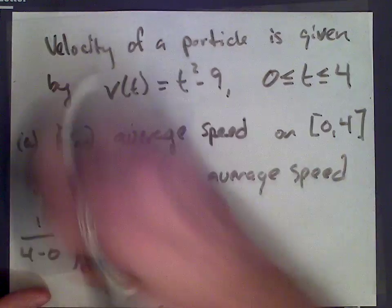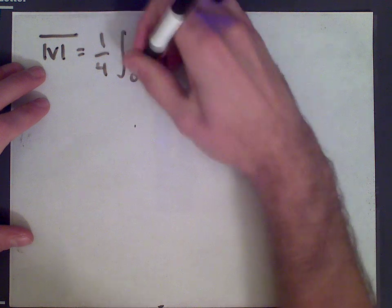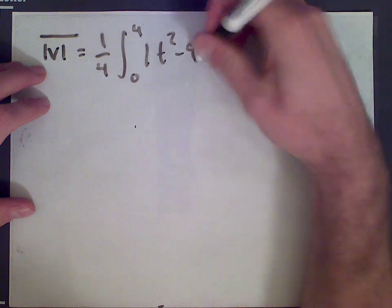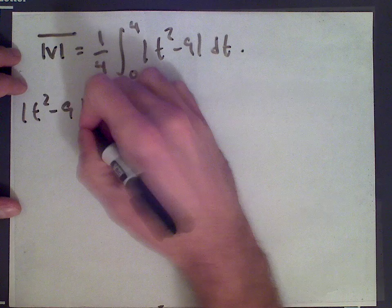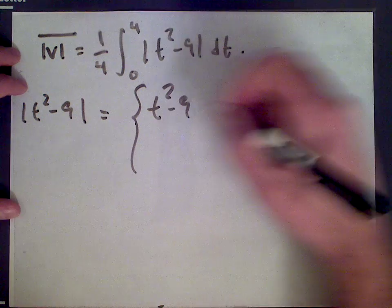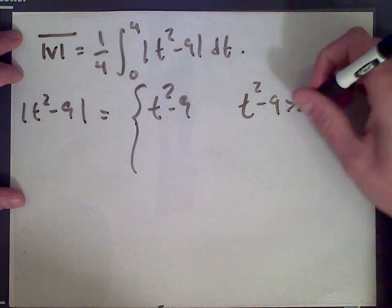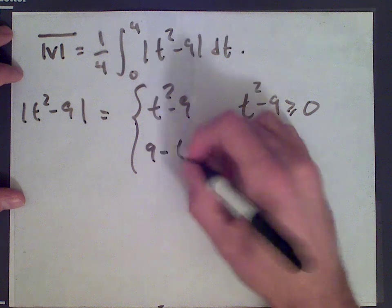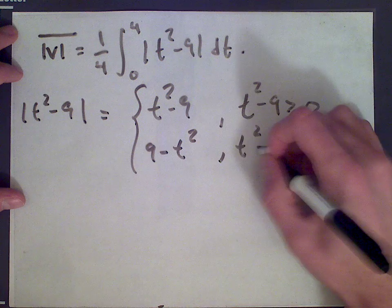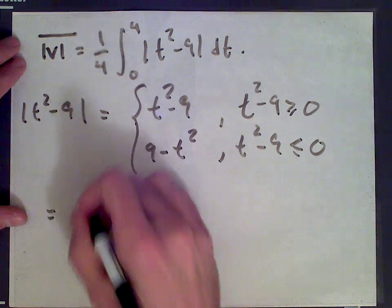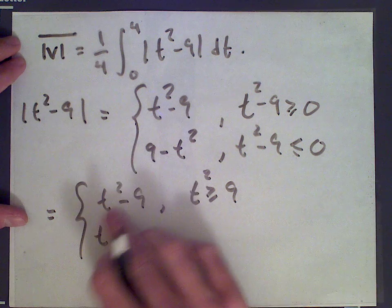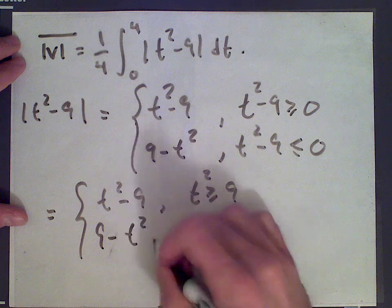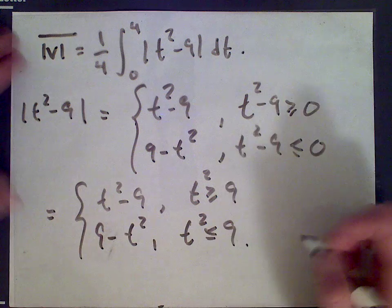So the average speed is 1/4 times the integral from 0 to 4 of |t² - 9| dt. For the absolute value of t² - 9, we split it into cases: it equals t² - 9 where t² - 9 is positive (i.e., t² ≥ 9), and it equals 9 - t² where t² - 9 is negative (i.e., t² < 9).